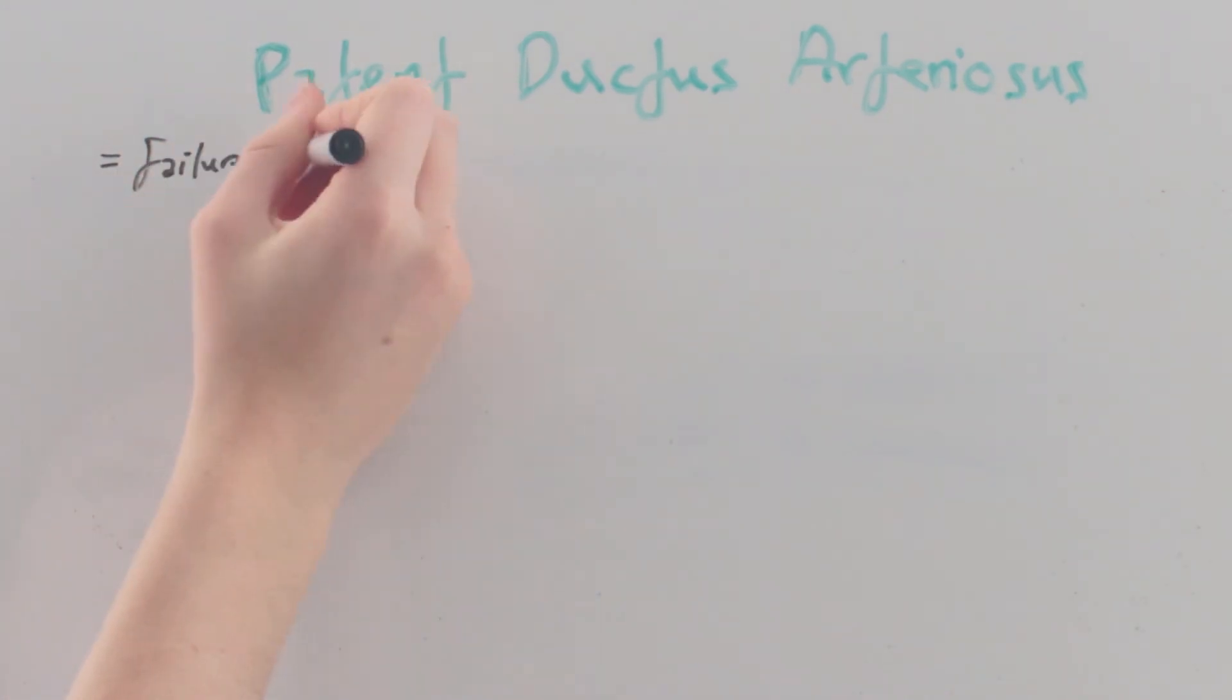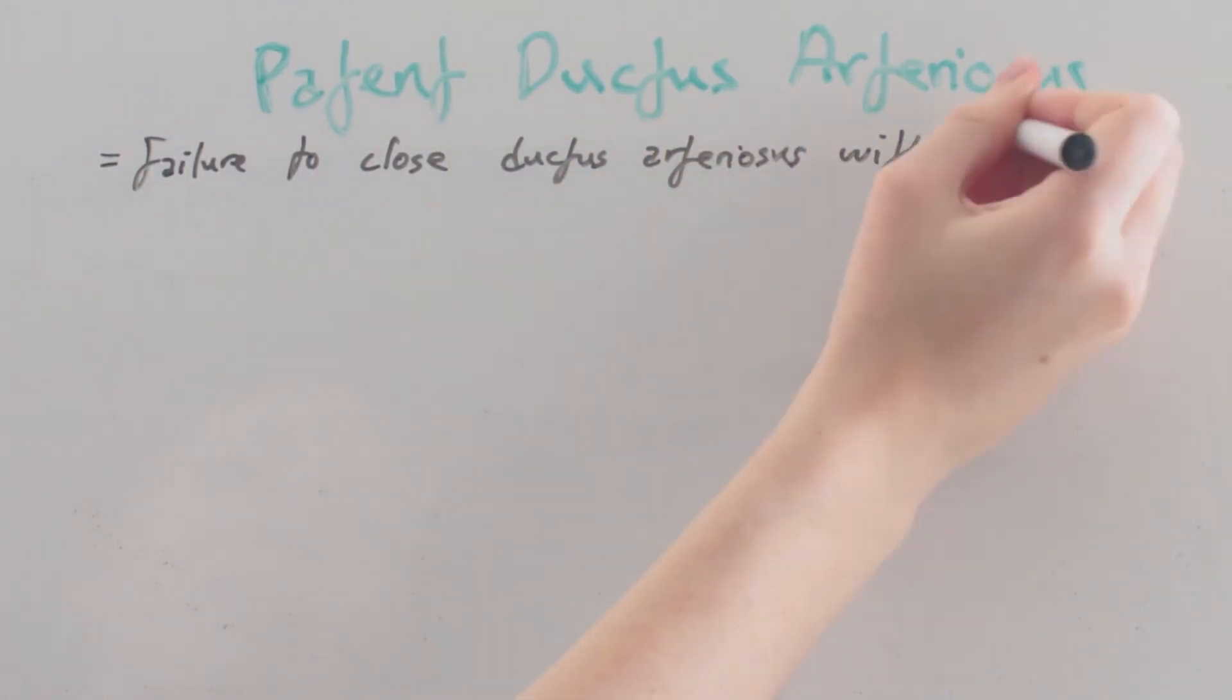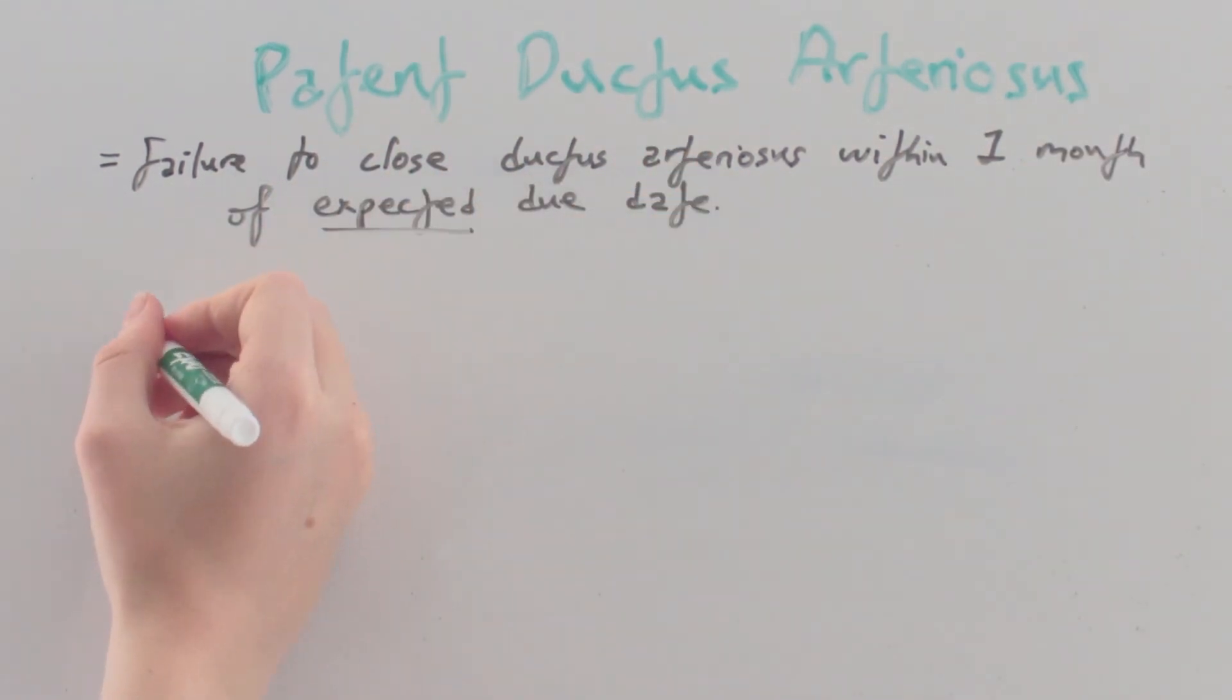So patent ductus arteriosus is defined as a failure to close the ductus arteriosus within one month of the expected due date. We'll create a rough timeline to understand this.